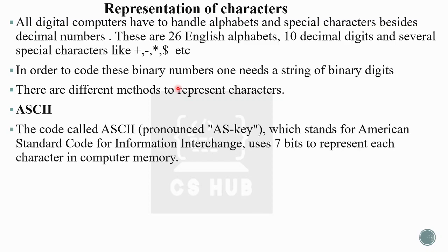The first method of character representation is ASCII, pronounced 'as-key'. ASCII stands for American Standard Code for Information Interchange. It uses seven bits to represent each character in computer memory.